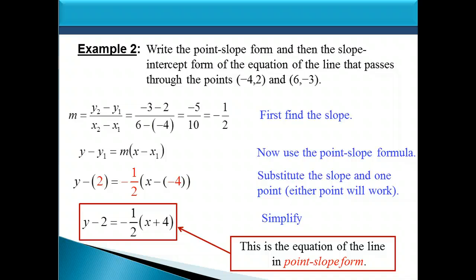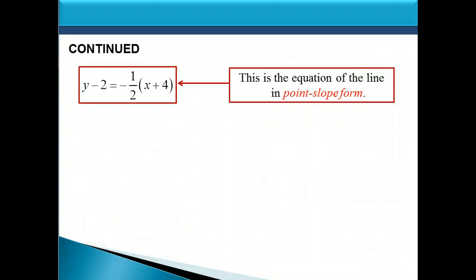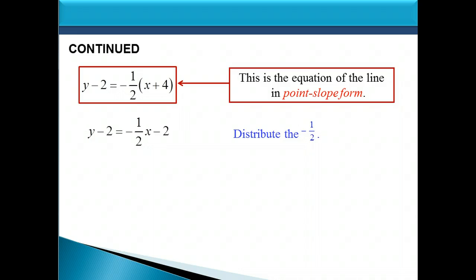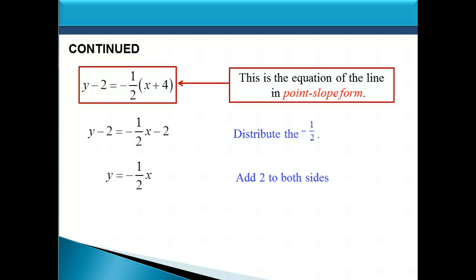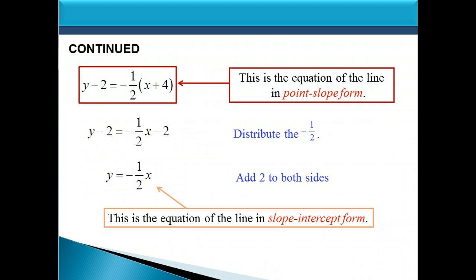Now we need the slope-intercept form. Starting with the point-slope form, we solve for y by distributing the negative 1 half: negative 1 half times x is negative 1 half x, and negative 1 half times 4 is negative 2. To isolate y, we add 2 to both sides — negative 2 plus 2 is 0, so the constant goes away. We end up with y equals negative 1 half x, which is the equation of the line in slope-intercept form.